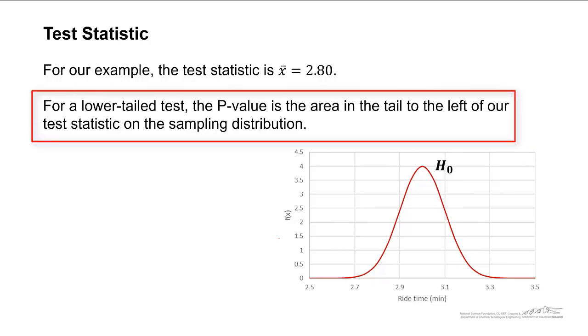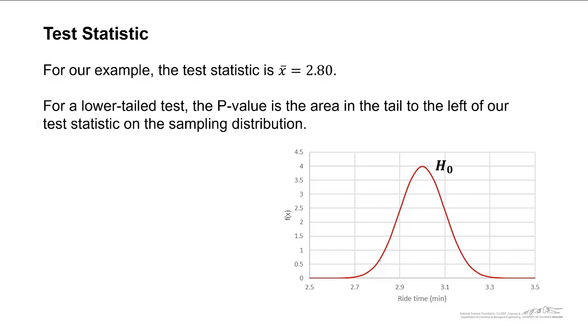For a lower-tailed test, the p-value is the area in the tail under the sampling distribution to the left of our test statistic. 2.80, that's our x-bar, is right there. So the p-value is simply the area underneath that curve to the left or in the tail of our distribution, of our sampling distribution. That right there is the p-value.